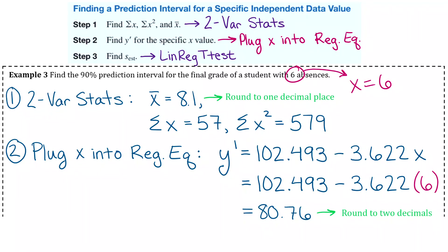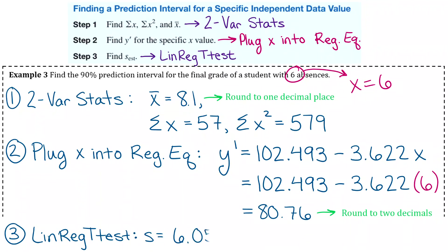Step 3 is to find the standard error of the estimate, which we just did in the previous example. Go to linear regression t-test and copy down exactly what it has for the s there — that was 6.055.